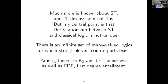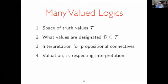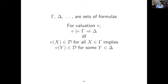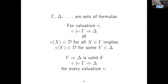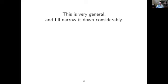Essentially everything that's been worked out for strict tolerant logic and classical logic applies to every one of these examples — it's an infinite set of many-valued logics for which strict tolerant counterparts exist. K3 and LP themselves have strict tolerant counterparts, and first-degree entailment has a strict tolerant counterpart. So the familiar logics fall into this category. For many-valued logics, I want to be very careful: you have a space of truth values, a subset of designated truth values, an interpretation for propositional connectives, and a valuation respecting that interpretation.